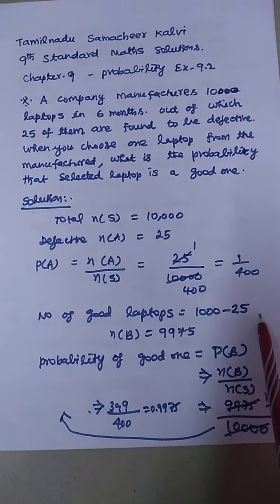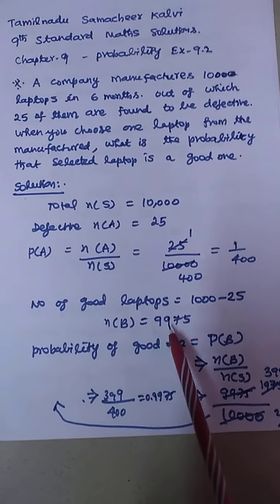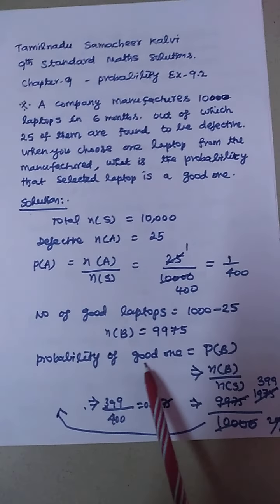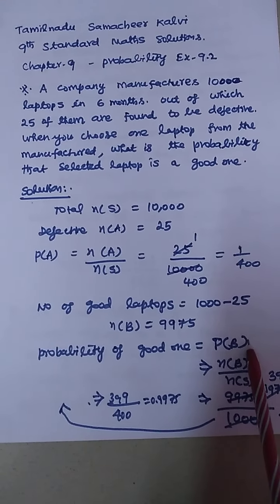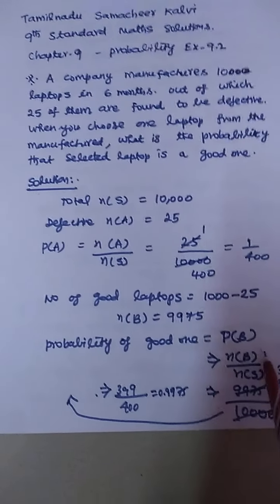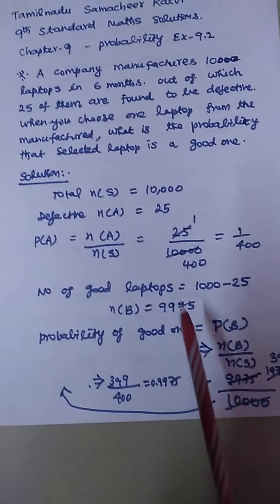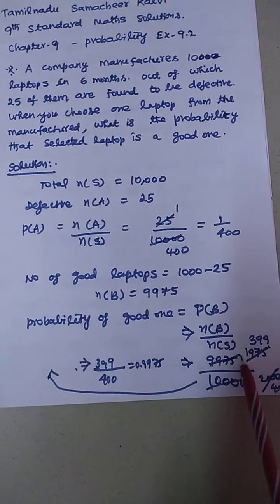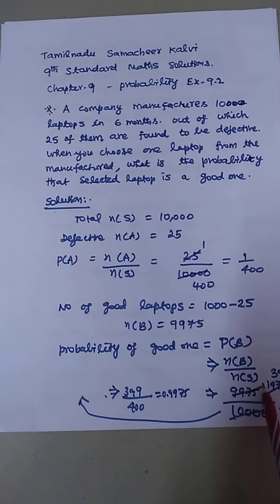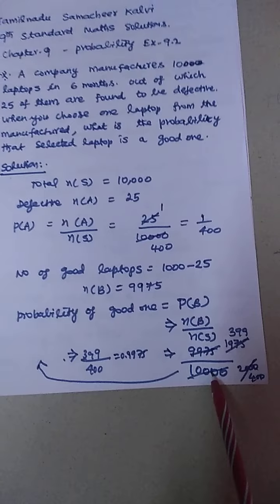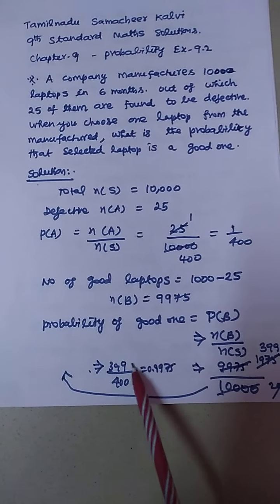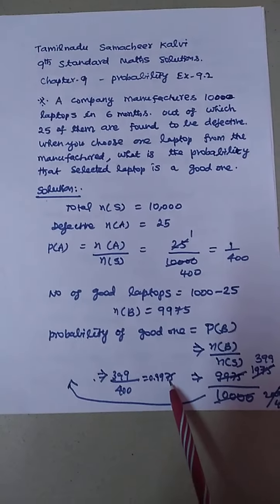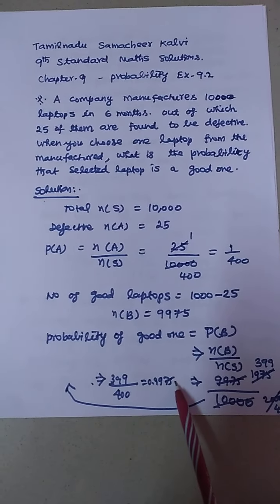Correcting the earlier mistake: 10,000 minus 25 equals N of B equals 9,975. Probability of a good one: P of B equals N of B divided by N of S equals 9,975 divided by 10,000, which equals 399 by 400, that is 0.9975.